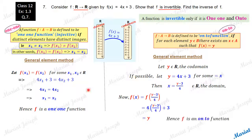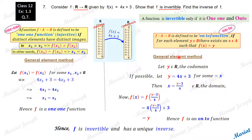Since we could prove that this function is one-one as well as onto, it is invertible. It is an invertible function and has a unique inverse.